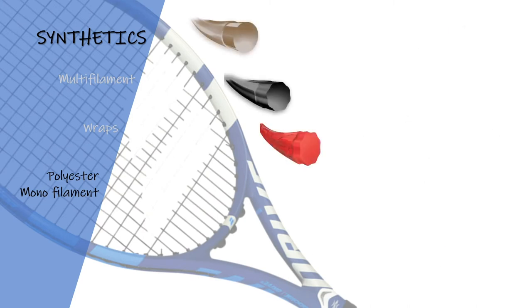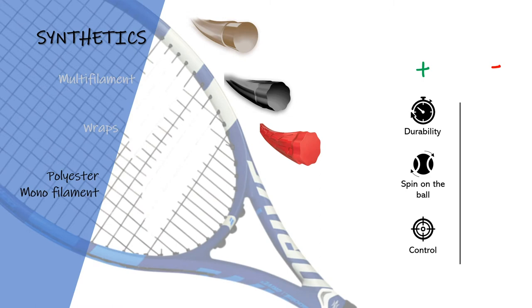The advantages of polyester strings are durability, spin on the ball, and control. In the inconvenience column, monofilament strings transfer more vibration and shock to the racket than multifilament string, so it is not recommended for beginners, young players, and players who experience pain in the forearm. We can also add to this column the loss of power and the loss of tension.